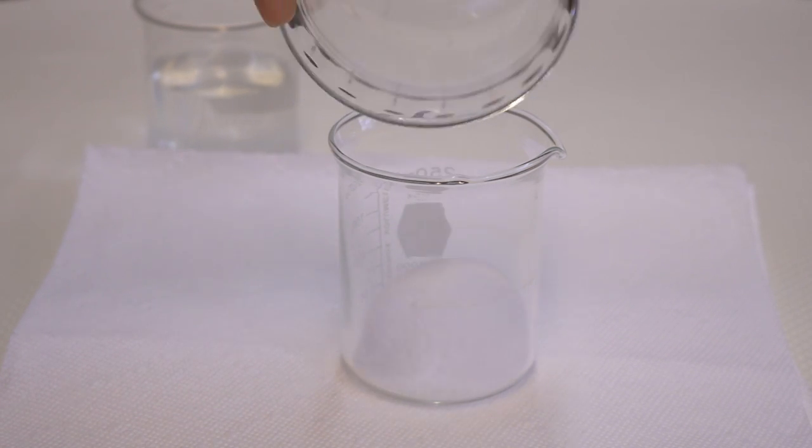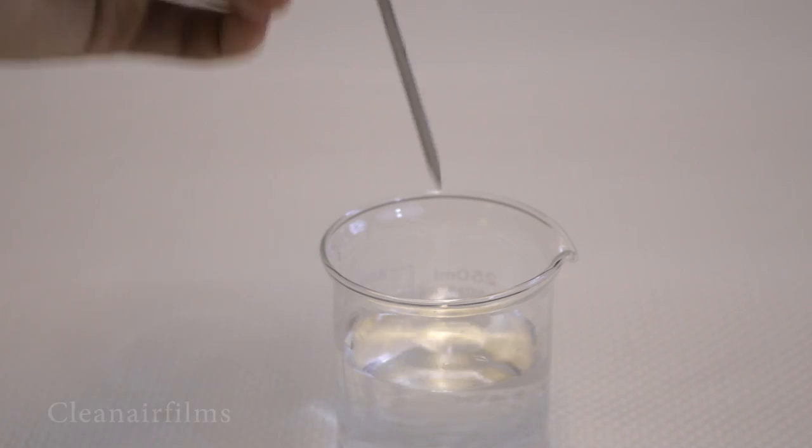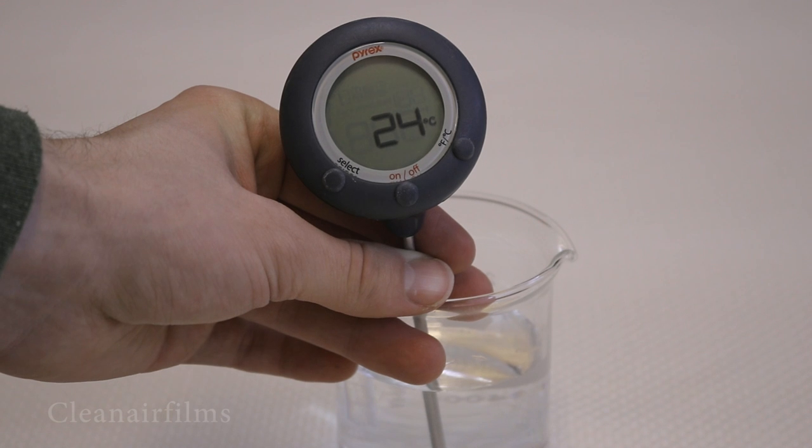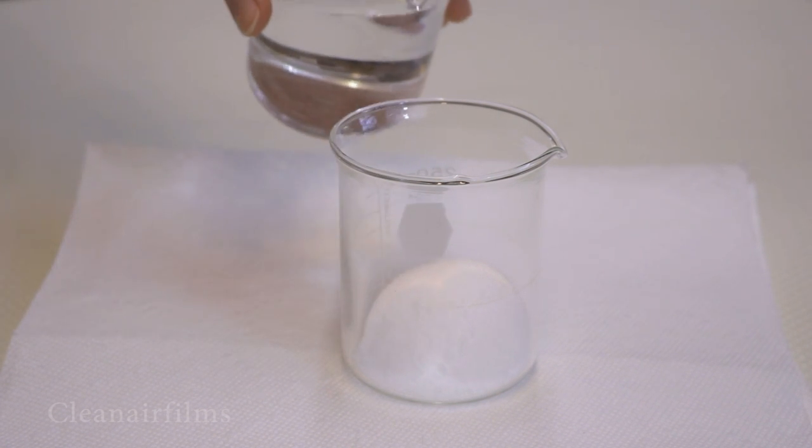We will start with about 30 grams of lye and place it in a heat-safe beaker. Our water is 24 degrees Celsius. Now I will slowly add the water to the beaker of lye.